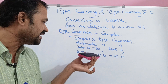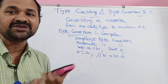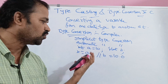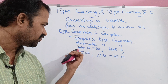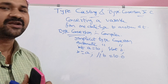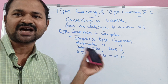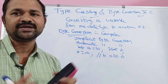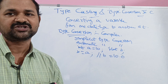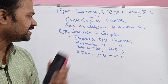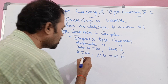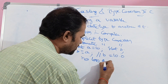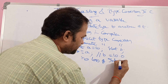This conversion is automatically done by the compiler, so the programmer doesn't need to do anything. While doing type conversion, there is no loss of any information.